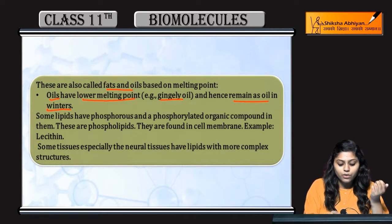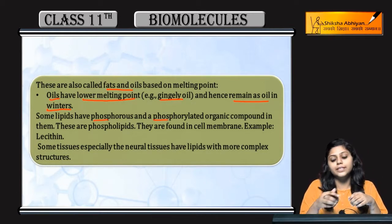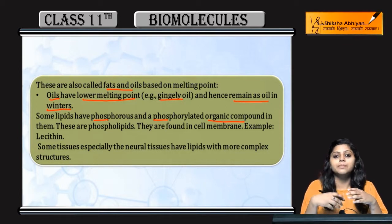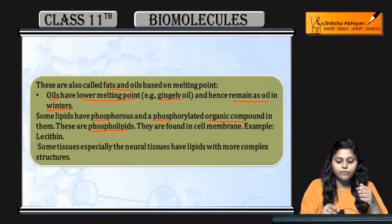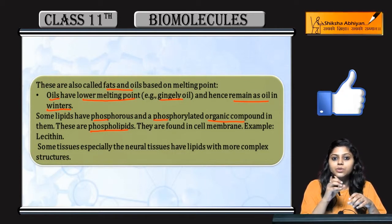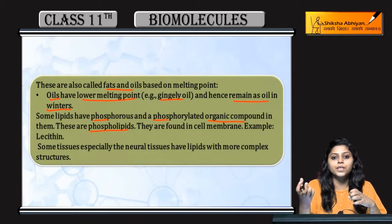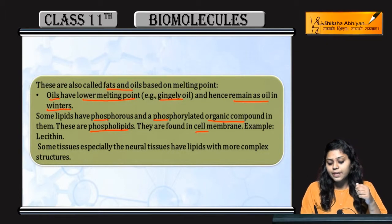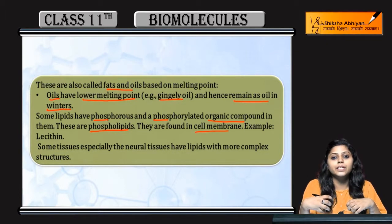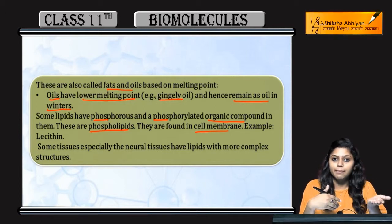Lipids could be phosphorylated organic compounds - means they are phospholipids. Lipids kya hai, fatty acid compounds hain, organic hai - carbon and hydrogen present hai, saath me kya hoga, phosphate group bhi ho sakti hain. They are mainly found in cell membrane - cell membrane ki composition padhi hai, is ki bani hootay hai phospholipid bilayer.